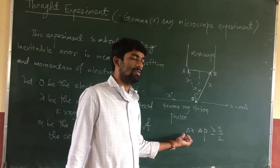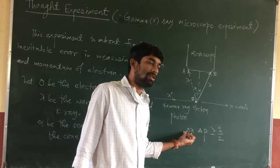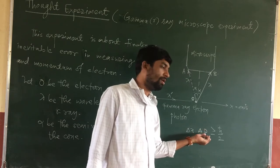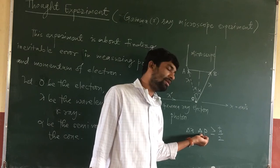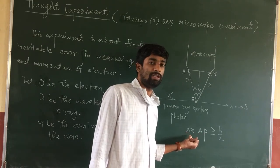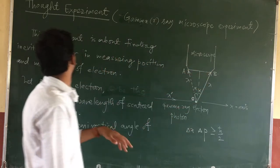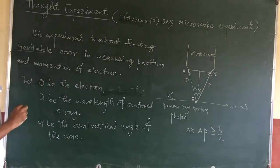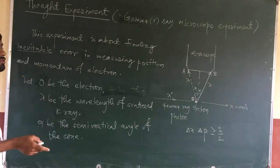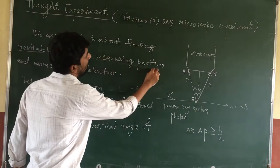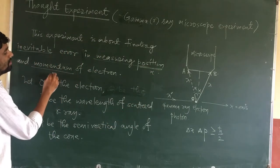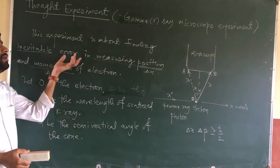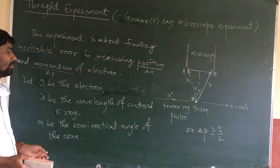Delta x is the uncertainty in the determination of position of the electron. Delta p is the uncertainty in the determination of momentum of the electron. The aim of this experiment is to find the inevitable — meaning unavoidable — errors in measuring the position x and momentum p. If there is uncertainty in position, it is delta x; if in momentum, it is delta p.